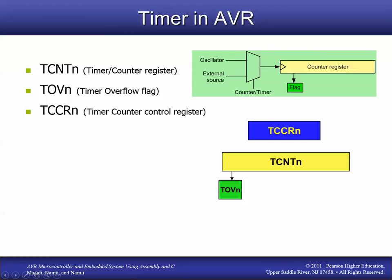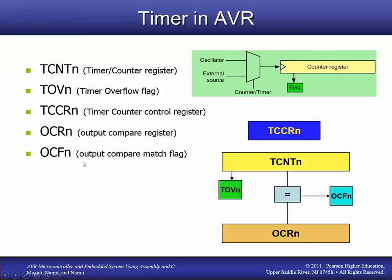The timer counter control register, TCCR, is where we do most of the configuration work, because its bits are used to configure the counter. For example, is the counter going to use an external source or the clock the microprocessor is running on? This is an 8-bit register, so there are 8 different bits to set, giving us several different parameters to configure. TCNT0 and TCCR0 are both registers, but TOV0 is a single bit — a flag — found in another register.